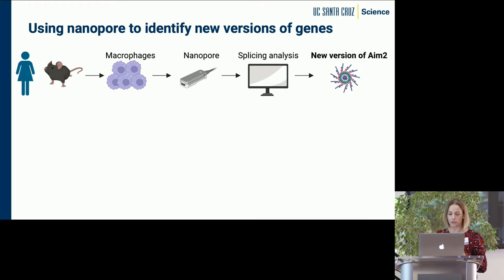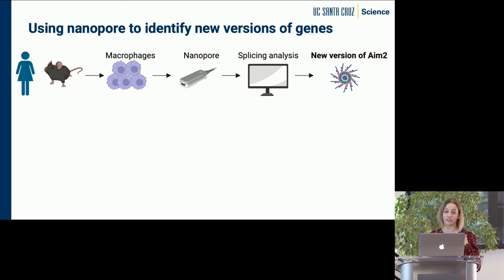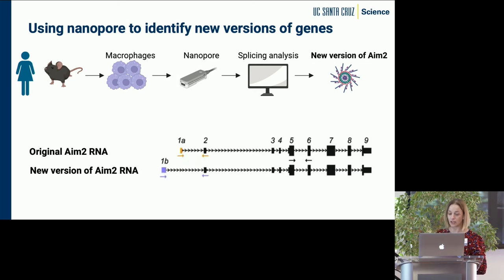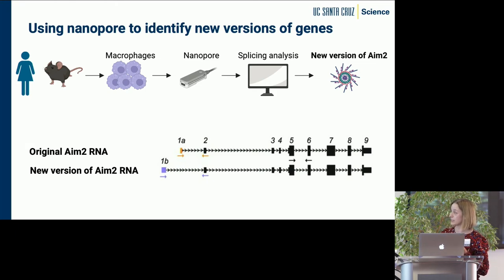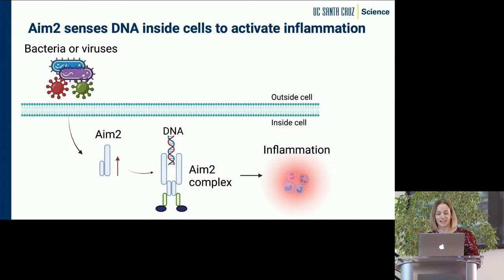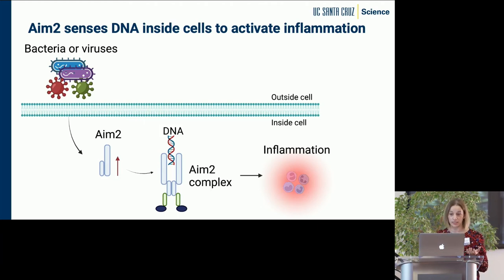One version in particular that we're super excited about is a version we identified of a protein called AIM2. This is a protein that's been studied for years and is very important in our immune system. Using this technology, for the first time, we identified a brand new version of this RNA. Showing you from the genome browser what this looks like — again the little boxes and arrows — the new version that we identified at the bottom is a slightly longer version. This protein has been studied for years, but this version has never been seen before.